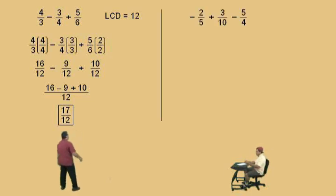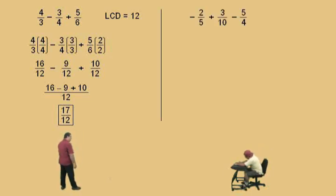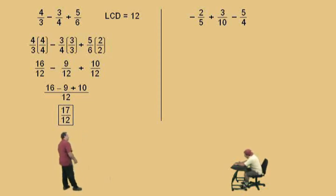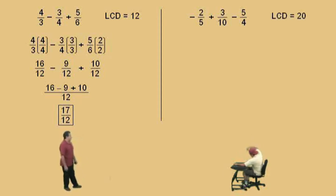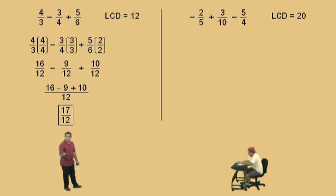Negative two-fifths plus three-tenths subtract five-fourths. What's the lowest common denominator here? Twenty — it is twenty. Ten does not work because four does not divide evenly into ten.